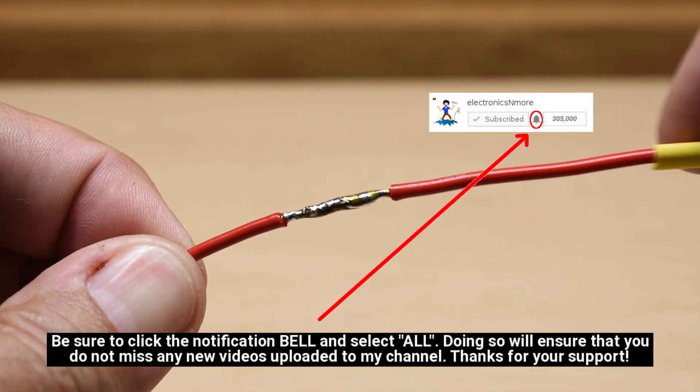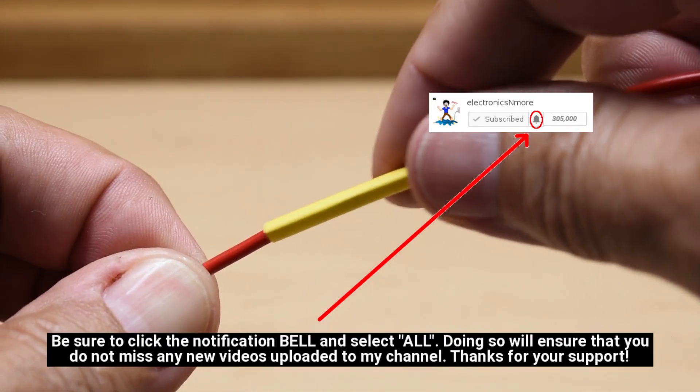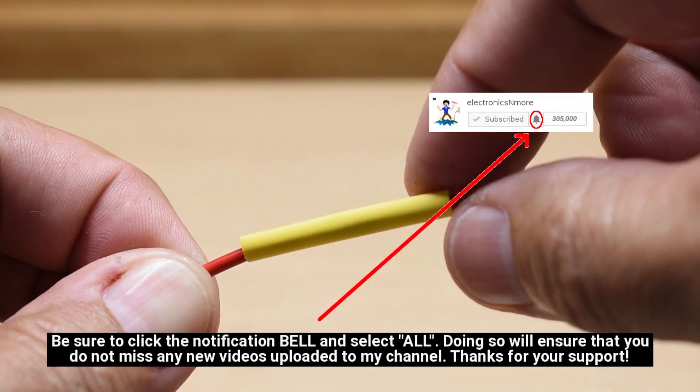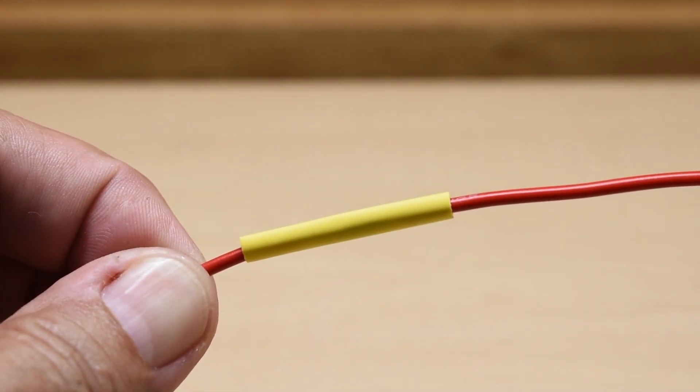Now you're going to take the heat shrink tubing, slide it over the repair area, and heat it up.